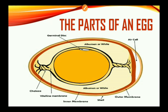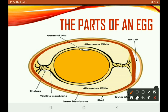Now guys, let's look at the parts of an egg. We have the air cell, the albumen or the white, the germinal disc, the chalazae, the vitelline membrane, the inner membrane, the shell, and also the outer membrane.